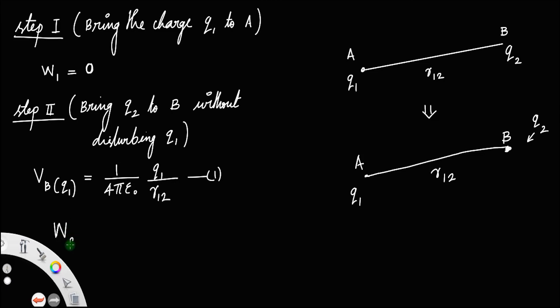Now, we are bringing the charge q2 to the point B where q1 provides a potential. So, the work done in that process, let us say W2, W stands for work done. W2 will be potential at B. We know work is equal to potential into charge. We are bringing the charge q2 to the point B. So, this will be equal to 1 by 4 pi epsilon 0 q1 by r12 into q2.